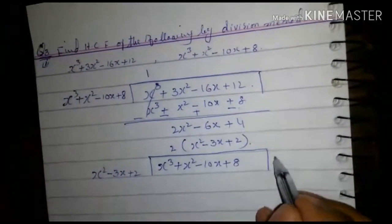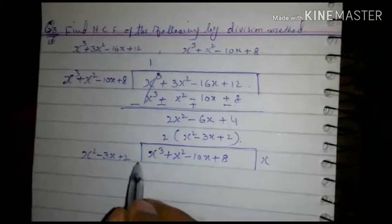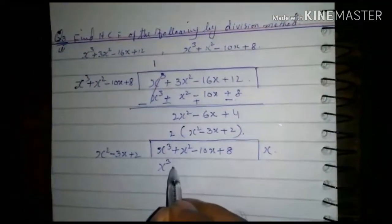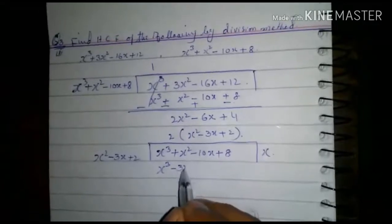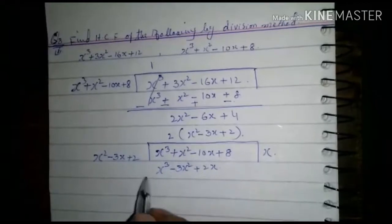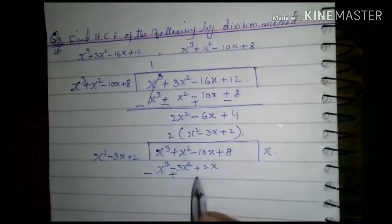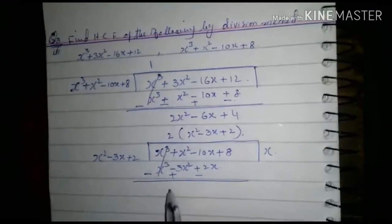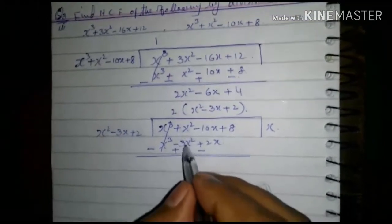x times x² into x gives x³ - 3x² + 2x. Minus, plus, minus. Cancel 3 plus 1 equals 4. 4x² - 12x + 8, plus 4.